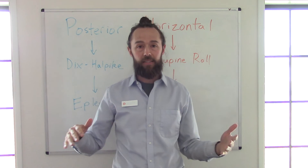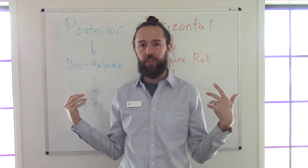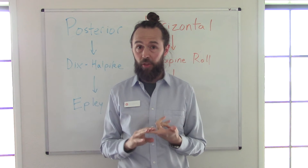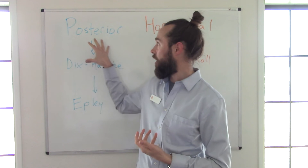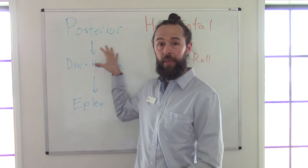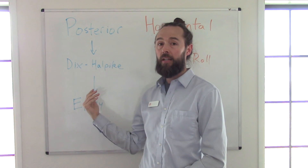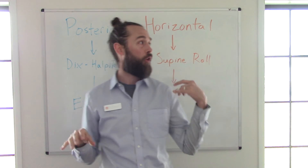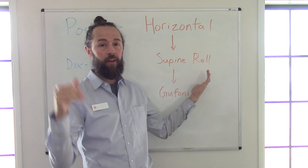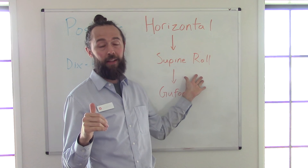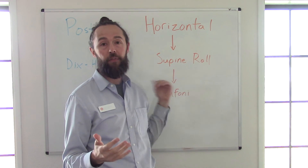After treatment, you treat, rest, and then retest and treat again as necessary. One important thing to note: sometimes you can start with posterior canal BPPV, treat it with the Epley, go to retest, and all of a sudden the eyes are beating to the side. You do the supine roll test to double-check and lo and behold it's converted from posterior canal to horizontal canal. That's discouraging, but it happens — and then you just go about treating it with the Gufoni.